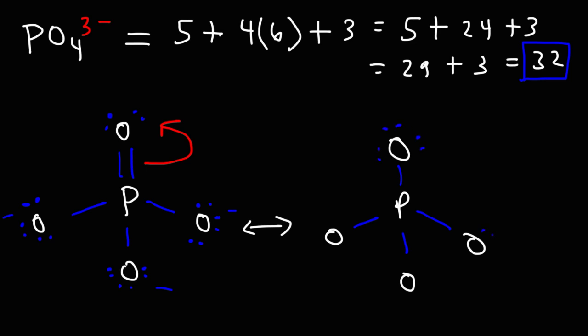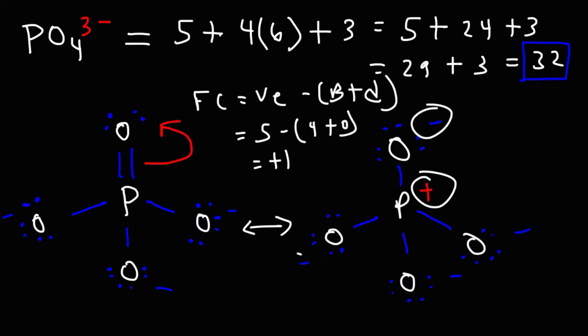Here, phosphorus has 4 bonds instead of 5, and every oxygen atom has a negative charge. Using the formal charge equation, where it's equal to the valence electrons minus the bonds and the dots, if we calculate the formal charge on phosphorus, it's going to be 5 valence electrons minus 4 bonds and it has no dots on itself. So we would get a plus 1 charge. Notice that if we add the plus 1 charge and the 4 negative charges, we still get a net charge of 3 minus. So this over here is an acceptable Lewis structure. Both of these are.